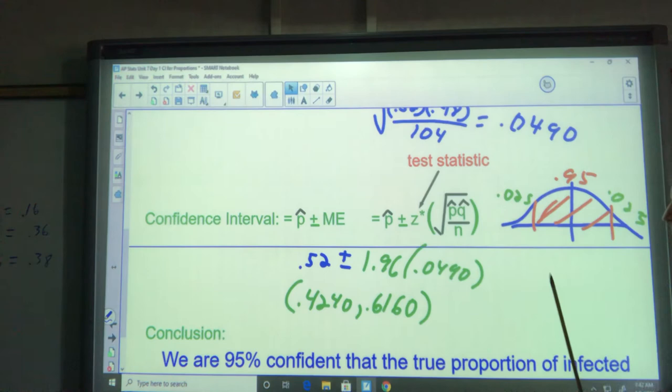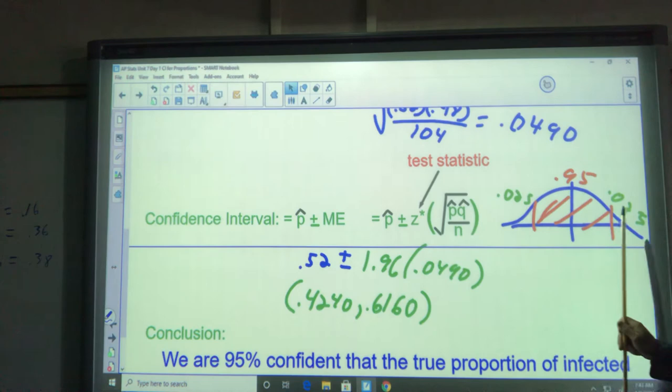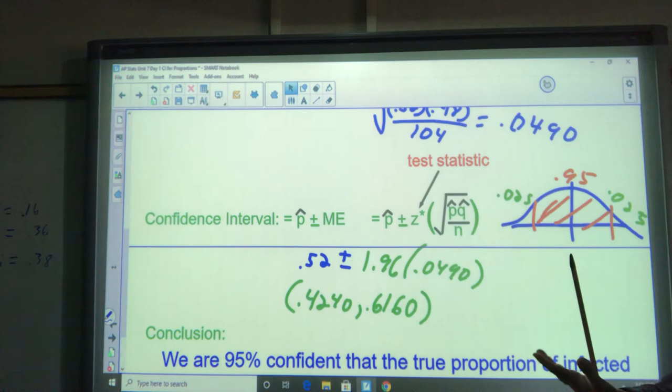So what I do is look up inverse norm. Notice that you always put the area to the left there. So I'm going to put in, if this is 95% we want, there's 5% left split between both sides. So that leaves 2.5% below this one and 2.5% above. So I just put in the left side here, 0.025 at inverse norm, and it'll round to negative 1.96.